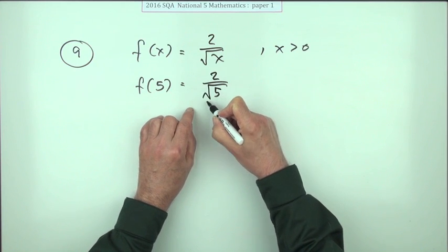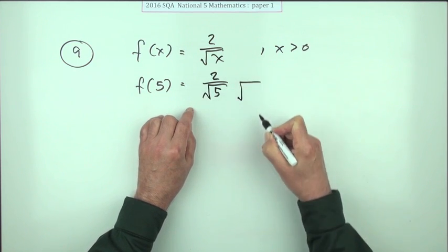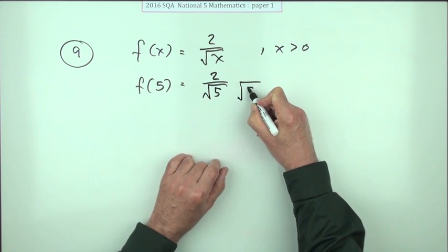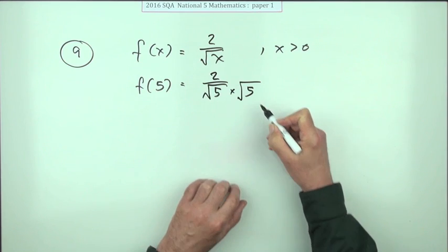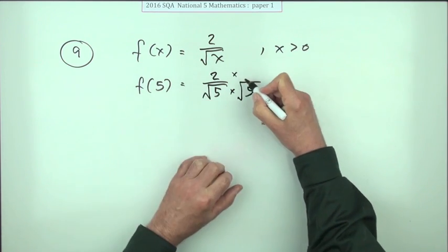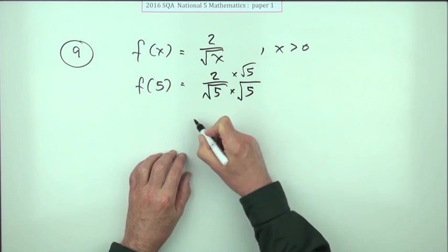Well there's a simple antidote for a square root: another square root of the same number. So if you multiply the bottom by root five, to keep the fraction the same we'll have to multiply the top by root five.